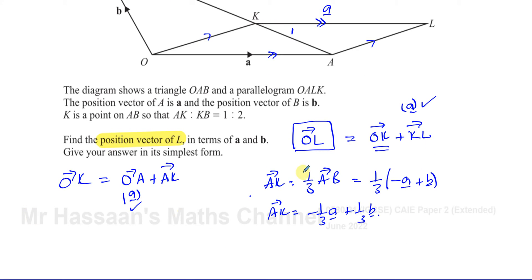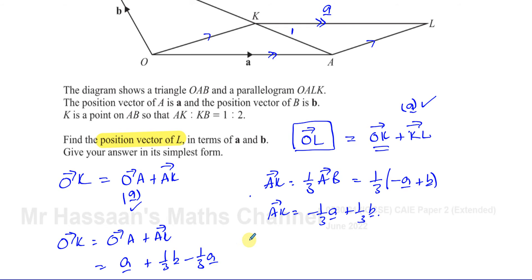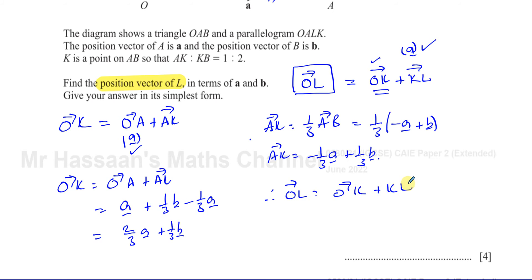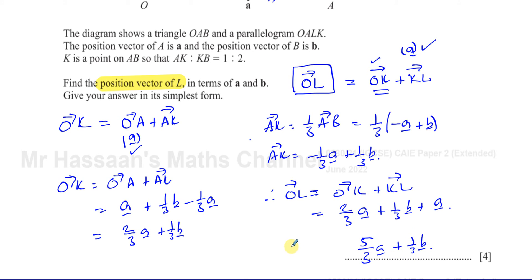So OK equals OA plus AK, which is A plus one third B minus one third A, giving two thirds A plus one third B. Therefore, OL equals OK plus KL, which is two thirds A plus one third B plus A. That gives two thirds plus three thirds, which is five thirds A plus one third B. That is the position vector of L.